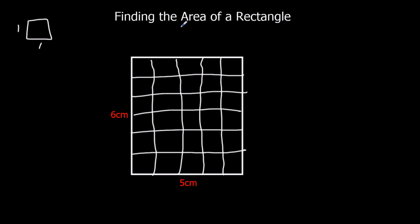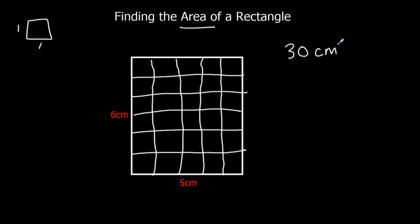When we're looking for the area, how many squares are there? Well, there's five, ten, fifteen, twenty, twenty-five, thirty squares. So the area is thirty centimetres squared.